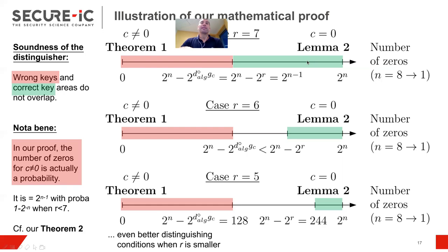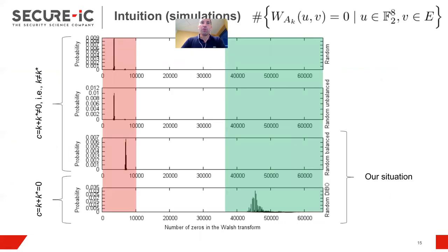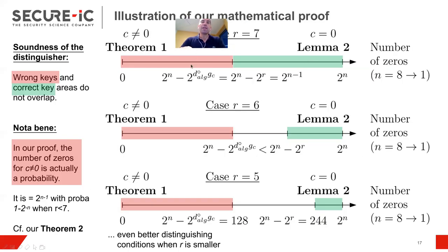And now the number of zeros for the correct key guess will be more. So, we have a lower bound. So, it will be between 2 to the n minus 1 and 2 to the n in this case. And when the rank is still smaller, then actually we have this interval and this interval. So, you see here we distinguish, but just by nothing. So, we have no room between the two. In practice, as you could recall, the values are much less. So, the bound we have here is kind of conservative. So, we can make it better. But anyway, we distinguish even better when R is smaller. So, here is the proof.